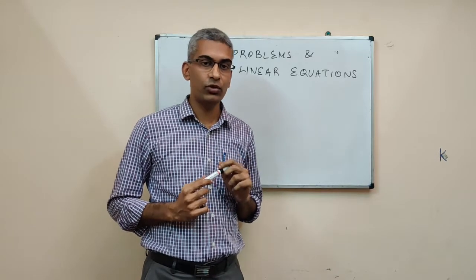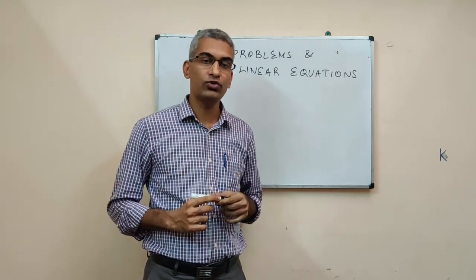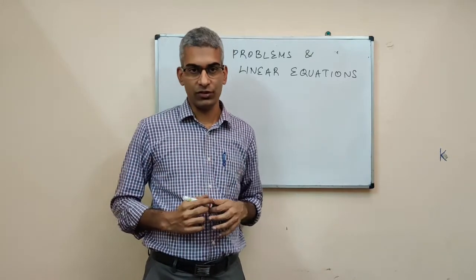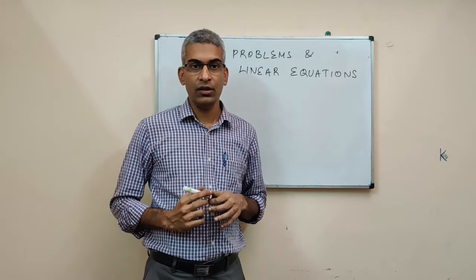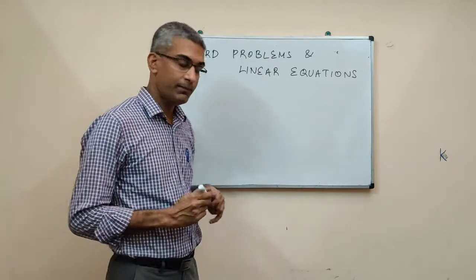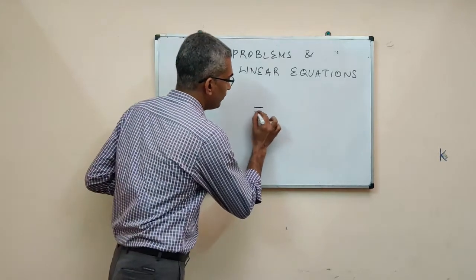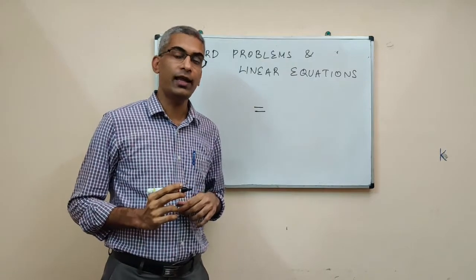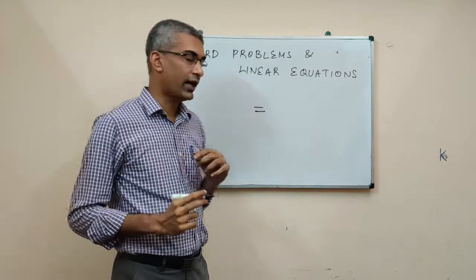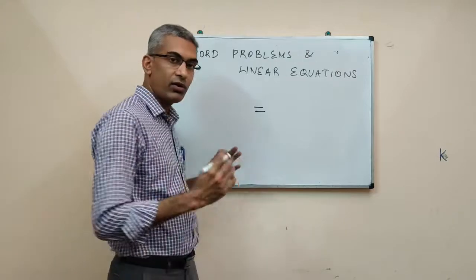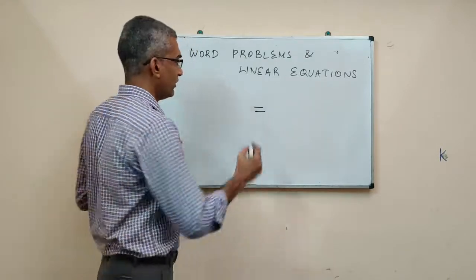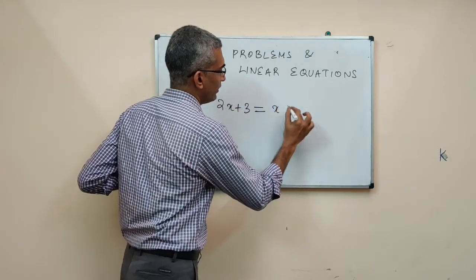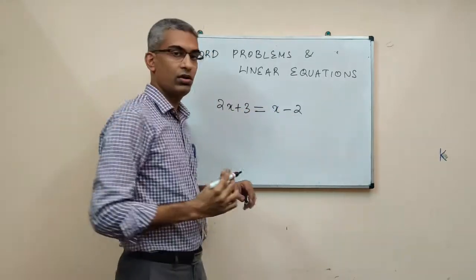In algebra, what we do is we represent the unknown quantity using some variable — it can be termed as A, B, X, etc. In a typical equation, a relationship connected using the equal-to sign is called an equation. In a linear equation, the power of the unknown variable will be 1. For example, it will be something like 2x plus 3 equals x minus 2.